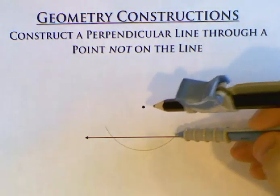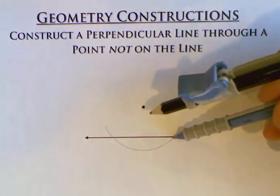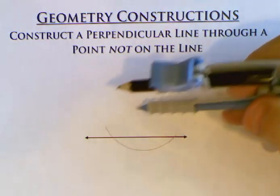And now I have these two points of intersection and these two points of intersection are equidistant from that point.